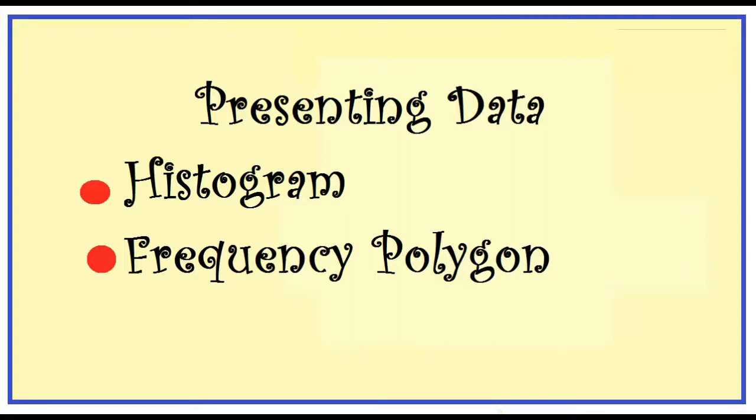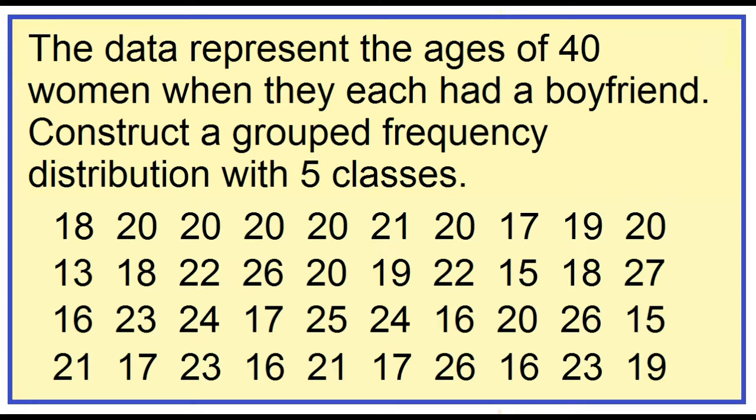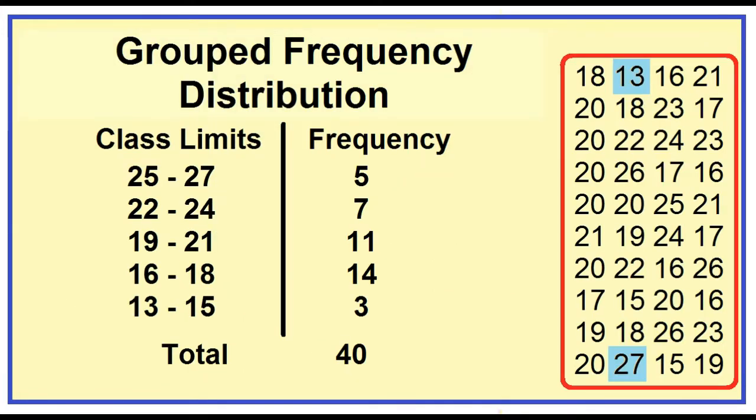Let's make a histogram and frequency polygon using the set of data. The data represent the ages of 40 women when they each had a boyfriend. Using the group frequency distribution, construct a histogram.